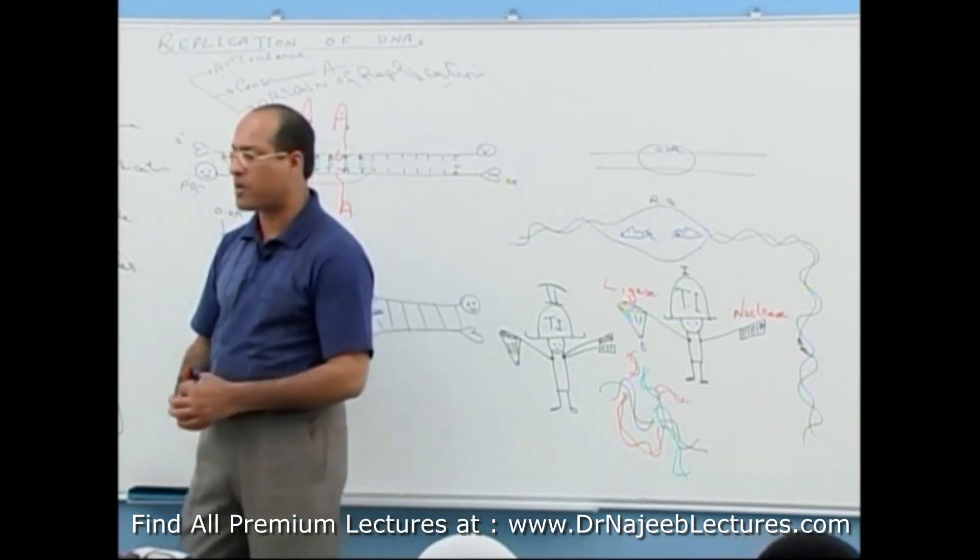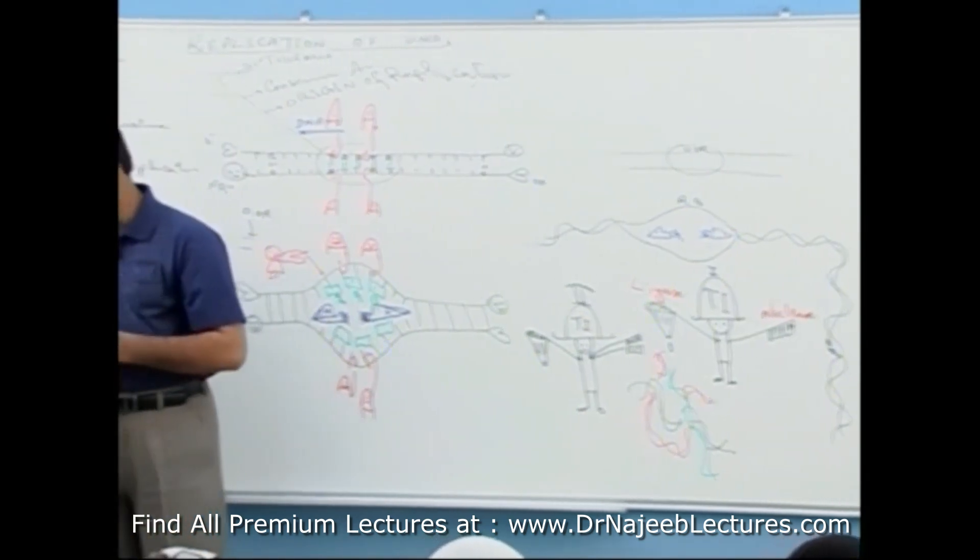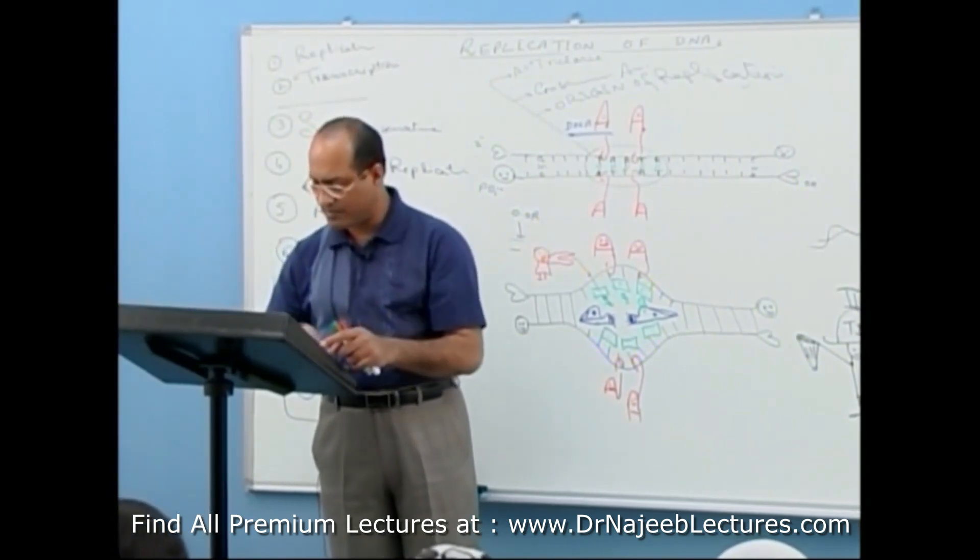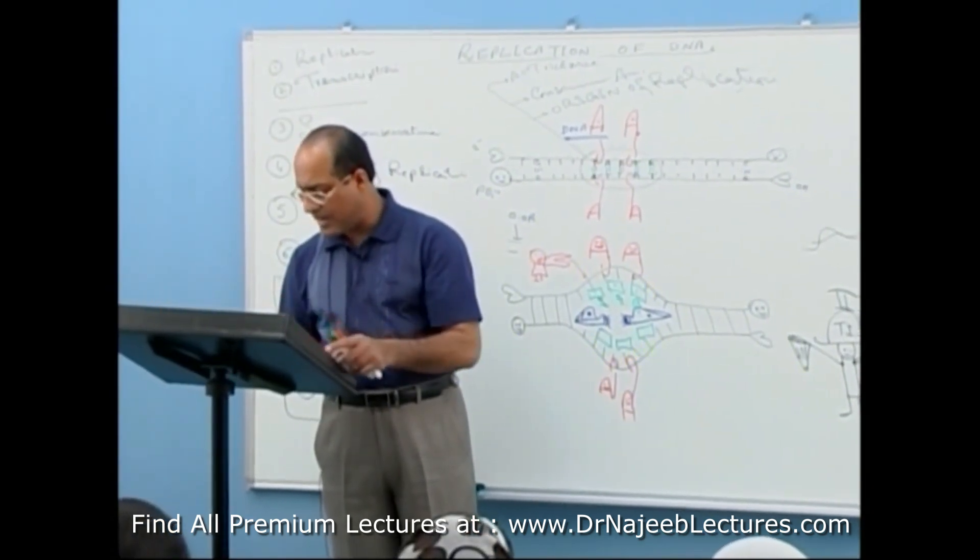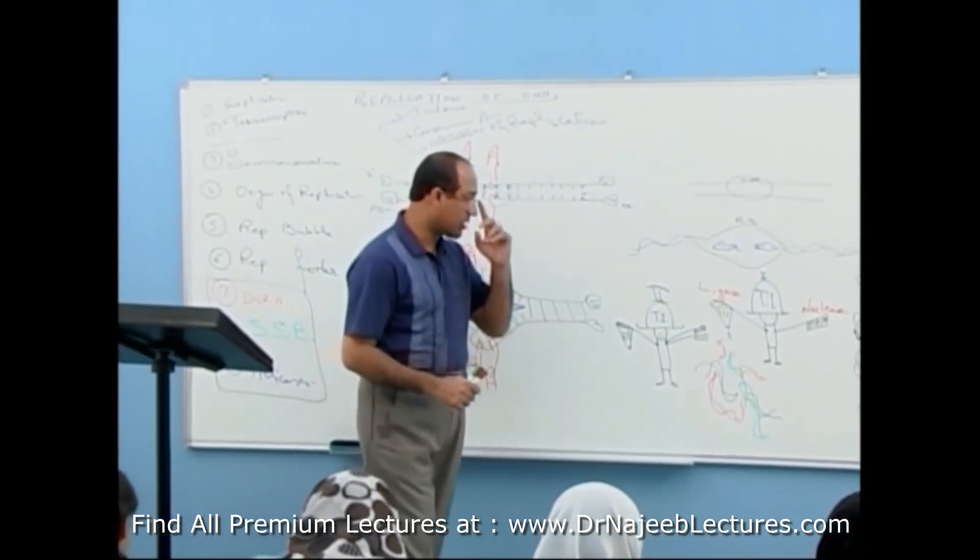And topoisomerases can solve the problem of positive super coils as well as negative super coils. Topoisomerases can solve the problem of positive super coils as well as they can solve the problem of negative super coils.